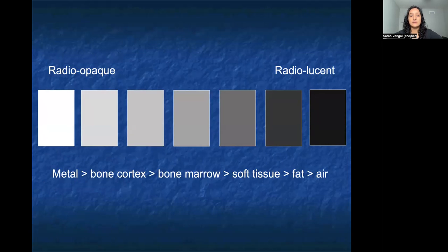So if we break it down, when we talk about something being radio-opaque, we are talking about the x-ray not being able to see through those items, so the object is going to appear very white in appearance. This is pretty typical for metal or bone cortex. Whereas when something is radiolucent, it means the x-rays go straight through it and it'll appear dark or black — very typical for fat or air.